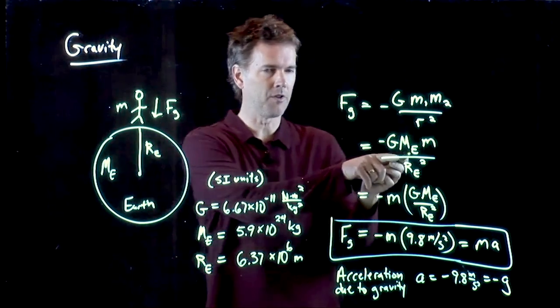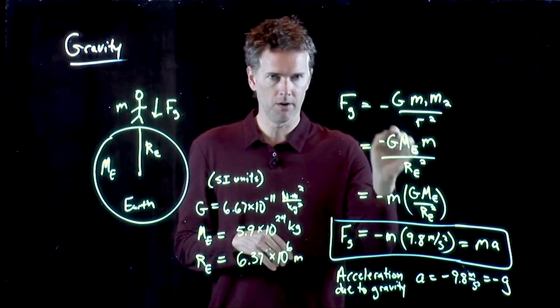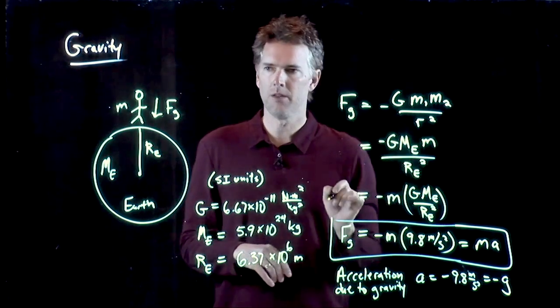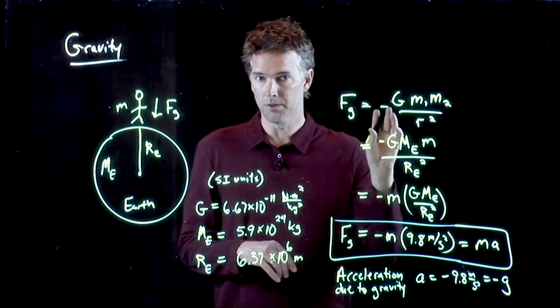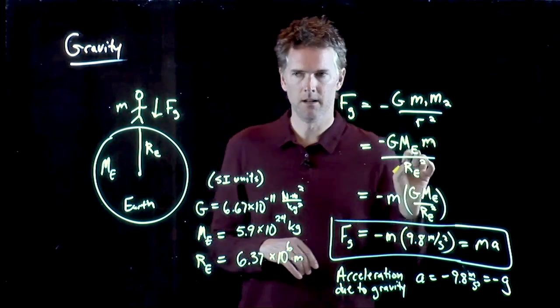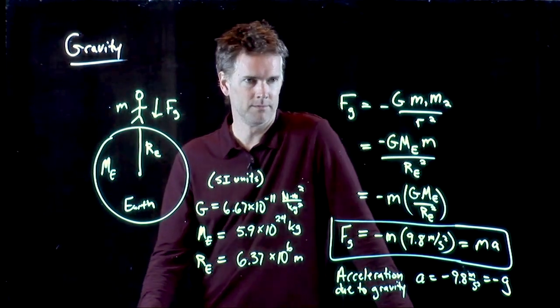It comes from Newton's universal law of gravitation. If you put in the mass of the Earth and you put in the radius of the Earth into this equation, you put those numbers in here, you get negative g, which I think is kind of cool. Kind of ties it all back together.